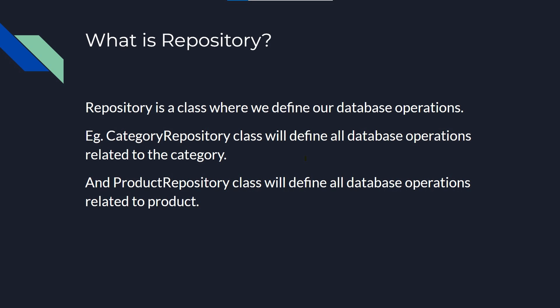First of all, let's talk about what a repository is. A repository is a class where we define our database operations. For example, CategoryRepository will define all database operations related to category, and ProductRepository class will define all database operations related to product.